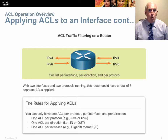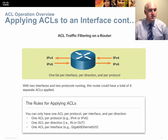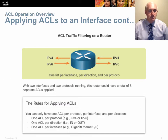When applying an ACL, you're limited to a single ACL per interface per direction per protocol. On one interface like fa0/0, you can only have one ACL in the inbound direction for IPv4, but you could have a second ACL in the inbound direction for IPv6. An interface can have several ACLs: one inbound, one outbound, and separate ACLs for IPv4 and IPv6.